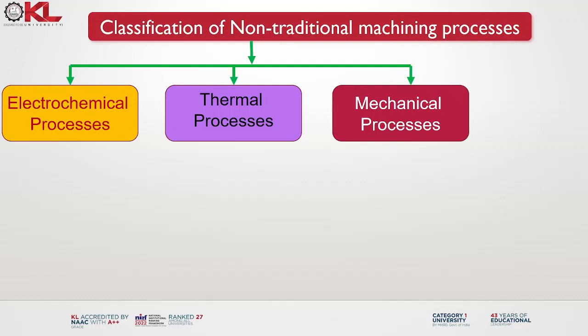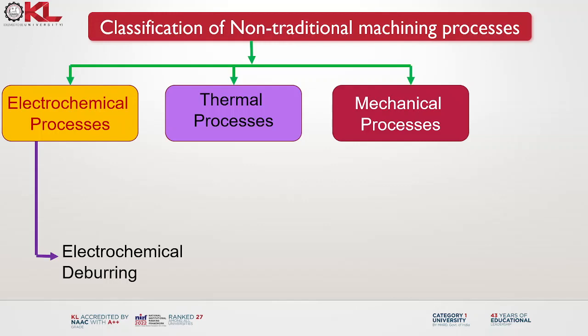Under electrochemical processes, the first sub-category is electrochemical deburring. Electrochemical deburring is a process used to remove burrs from metal workpieces using electrochemical dissolution. Burrs are unwanted raised edges or rough surfaces that occur during machining operations such as drilling, milling or turning operations. They can affect the functionality, performance and aesthetics of the final product.